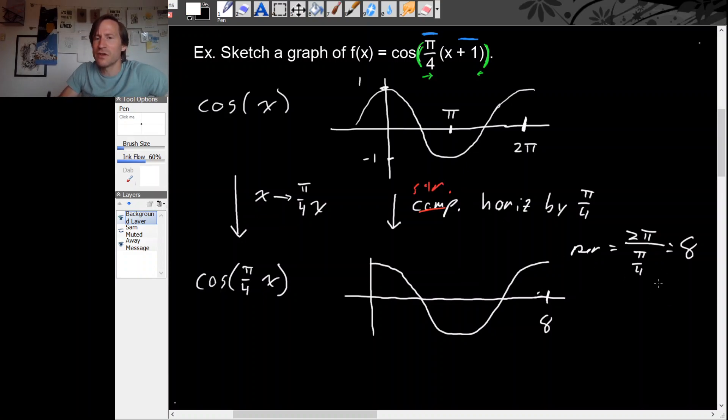The other way to figure that out is this coordinate right here, 2 pi that we started with, when you compress by pi over 4, well when you compress by any number, what that does to a horizontal coordinate is it divides it by that value. You can see that this is the same thing that we got by thinking about the period.